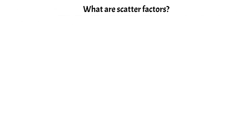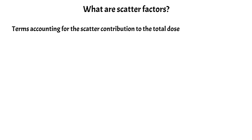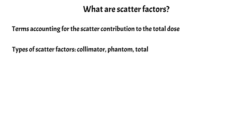We can start with what a scatter factor actually is. It's a term that accounts for the scatter contribution to the total dose. As mentioned in a previous video, the total dose in a hand calc can be broken into three parts: the contribution from primary dose, and contributions from scatter — both from the collimator and from the phantom. Because of that, there are really three scatter factors we consider in a hand calculation: the collimator scatter, the phantom scatter, and then the previous two can be multiplied together to form the total scatter factor.